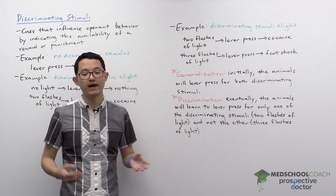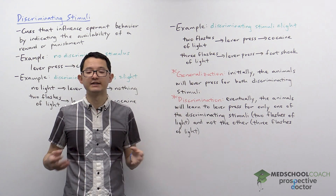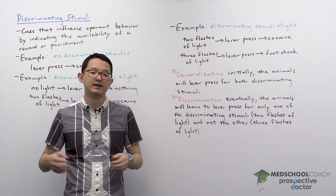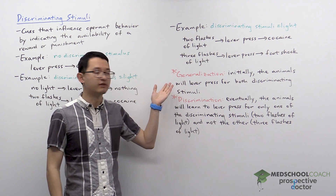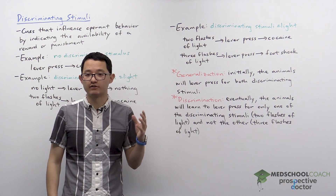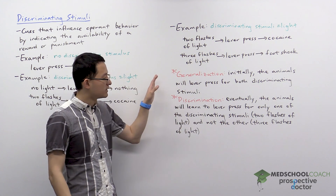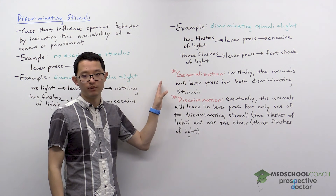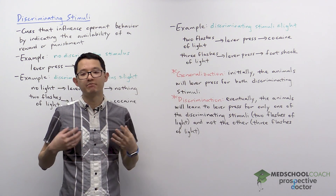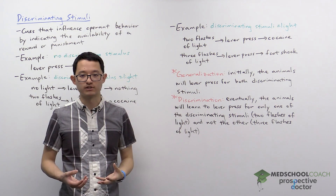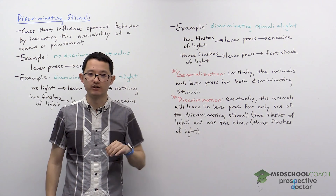In this case, the rat is not able to distinguish between the two discriminating stimuli and just considers them to be the same. You might wonder why it presses for both — if it knows one is potentially aversive, maybe it won't push at all. The reason the animals will lever press for both discriminating stimuli is because cocaine is an extremely powerful reinforcer, so the rats are going to lever press if they have the chance of getting cocaine.